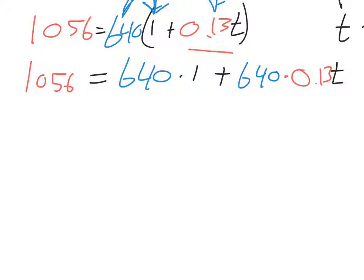When you multiply those out, you get 1056 equals 640 times 1, which is 640. Then 640 times 0.13, that's 83.2.